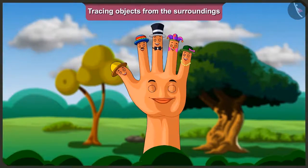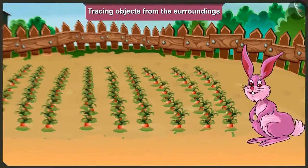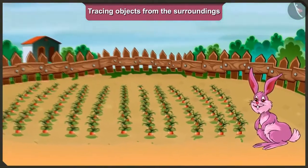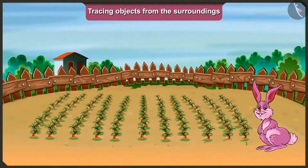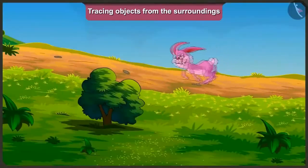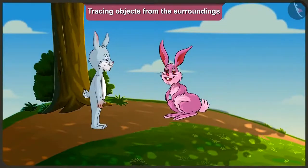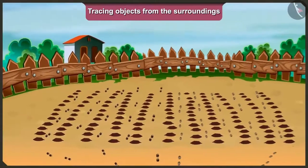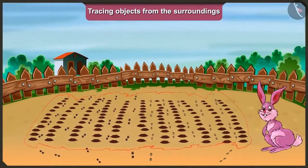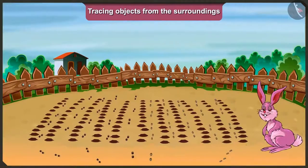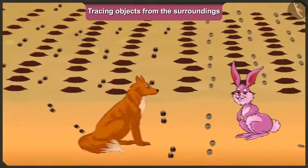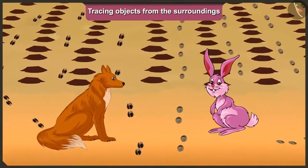Do you like listening to stories? So listen carefully. There was a rabbit who had grown very good carrots in his farm. One day, he went to meet his king brother. But when he returned, all of the carrots from his farm were missing. When he saw this, he immediately called his friend, the clever fox.